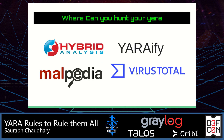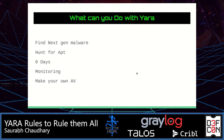Where can you hunt with YARA? You can use Hybrid Analysis, Malpedia, and VirusTotal — though VirusTotal requires a premium license. There's also a newer one, MalwareBazaar (er5) from abuse.ch, which is really good. Using YARA, you can find next-generation malwares, hunt for APT groups, find zero-days, monitor APT groups, make your own AV, and combine it with Zeek to build an intrusion detection system. There are numerous cases where people have identified zero-days using YARA rules.